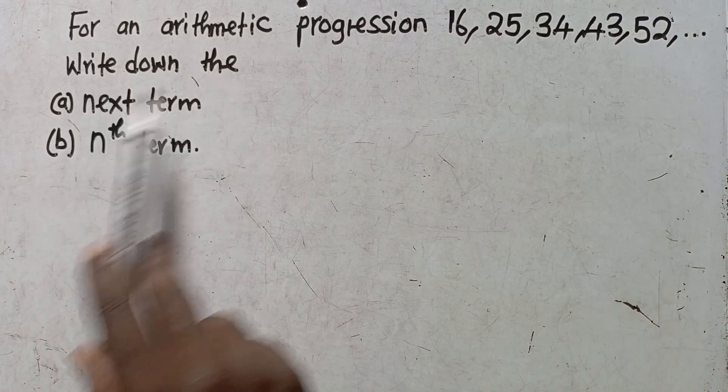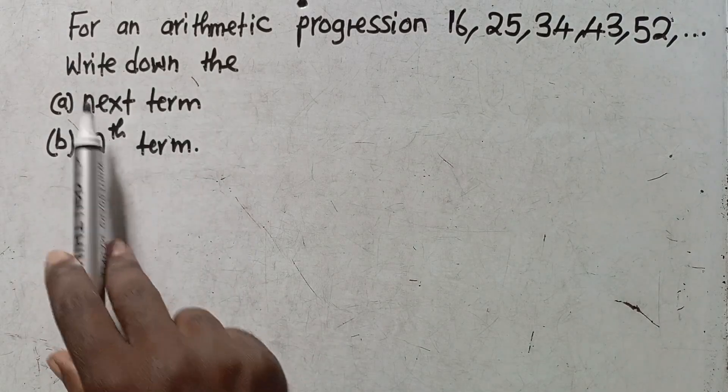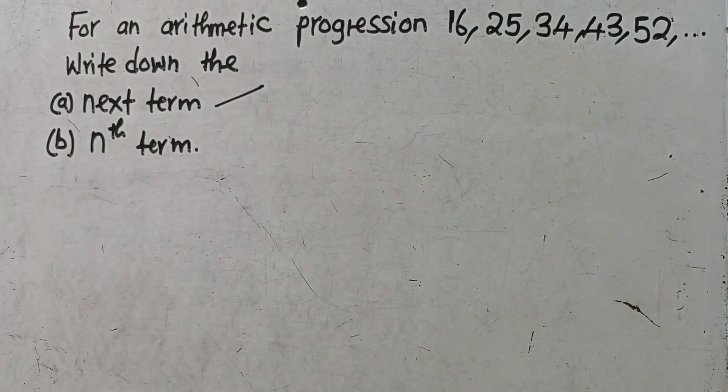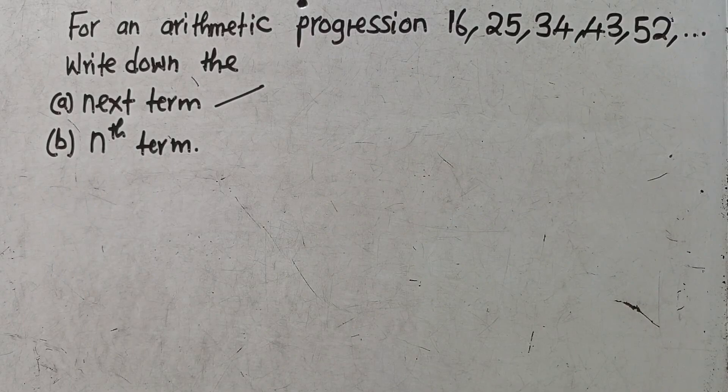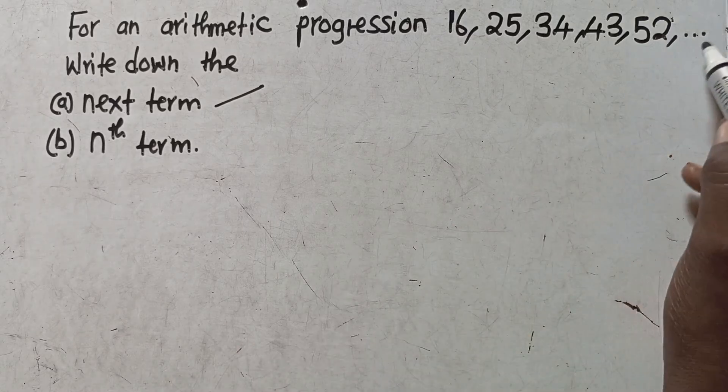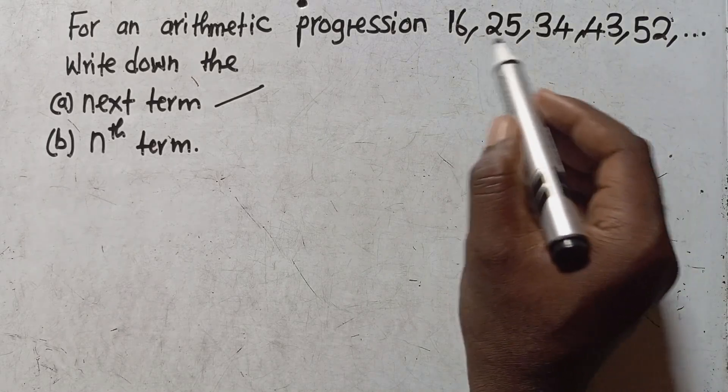The first question is saying write down the next term. So you are taught to write down the next term. How can you answer this particular question? For you to come up with the next term after 52, you need to find the common difference.